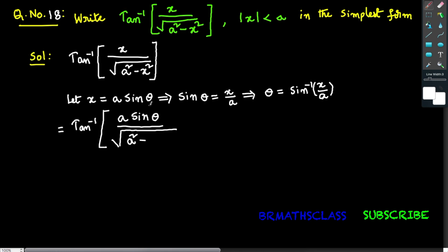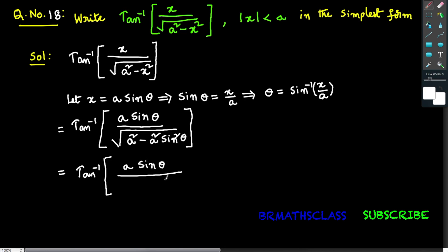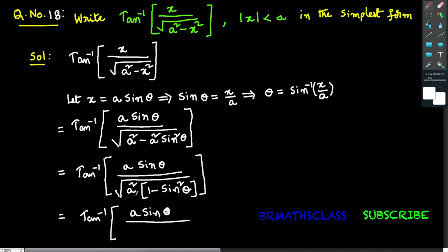If you take x equals to a sine theta, then x square is a square sine square theta. Substituting into the given expression, we get tan inverse of a sine theta divided by — observe in the denominator inside the square root — I take a square common. The remaining expression is 1 minus sine square theta, giving tan inverse of a sine theta divided by square root of a square into 1 minus sine square theta.